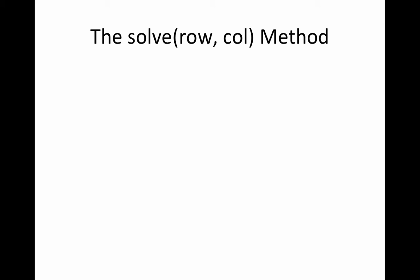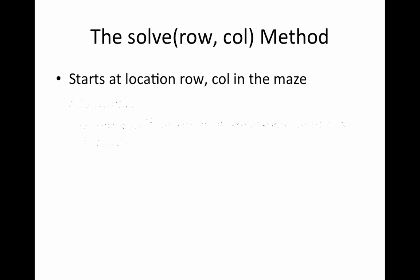Let's now delve into the actual interesting part, which is the recursive solve method. The solve method obviously will have to start from where the argument tells it, from the location row and column in the maze. Now since someone has called solve with that particular row and column, the method is going to assume that a series of stars are in the maze already and are leading up to this location.